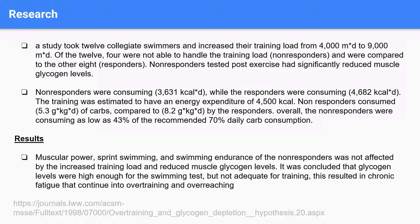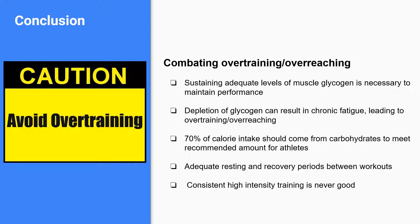This ended up resulting in chronic fatigue that continued into overtraining and overreaching. We know that it's important to sustain adequate levels of muscle glycogen to maintain performance throughout exercise. If we don't do this, chronic fatigue can arise, which often leads to overtraining and overreaching. To avoid this, it's best to consume around 70% of whatever amount of calories are required, and these calories should come from carbohydrates.